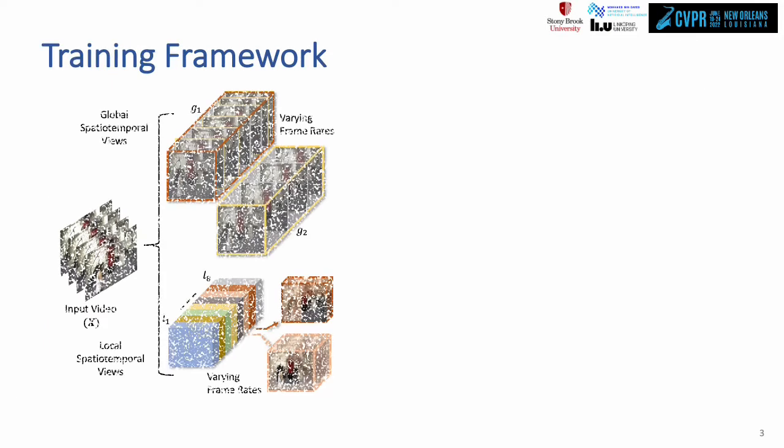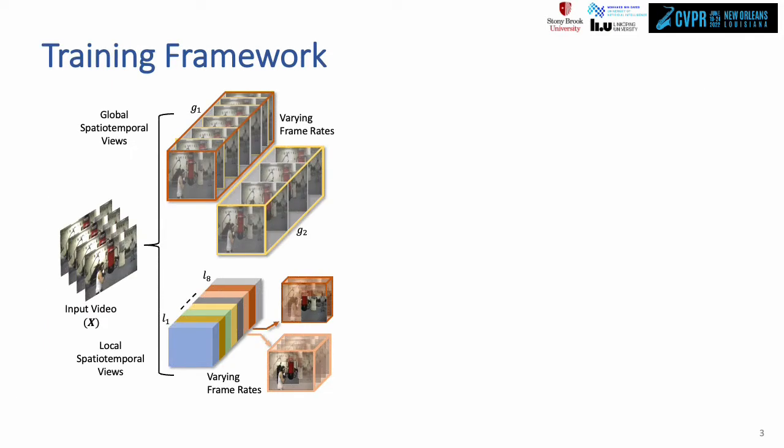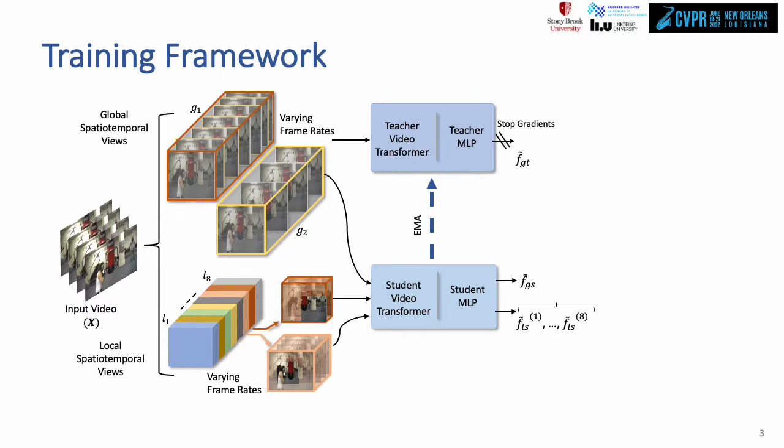Following this strategy, we generate multiple views tagged global and local based on how much of the video they span. The high-resolution global view is considered the target, and all other views are matched to it in feature space.